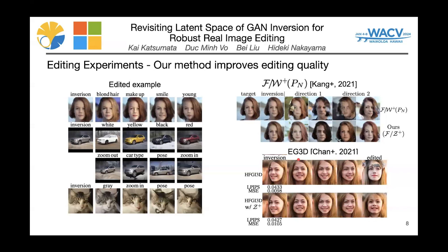The right bottom figure shows editing experiments with 3D GANs. We used HFGI 3D, which is a GAN inversion method for EG3D. We replaced FW+ space in HFGI 3D with G+. Our HFGI 3D with G+ can preserve visual quality after performing latent editing operations. In this study, we achieved GAN inversion with high reconstruction quality and high editing quality, by revisiting the latent GAN space and demonstrating the superiority of our GAN inversion for both 2D and 3D GANs.